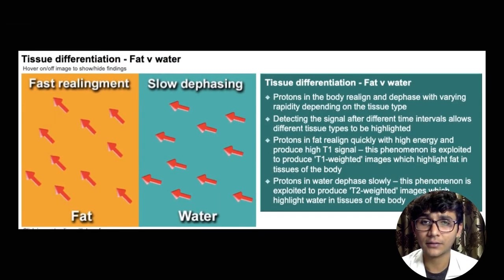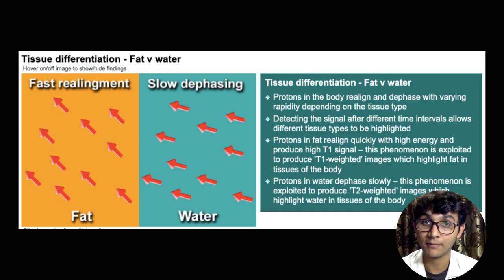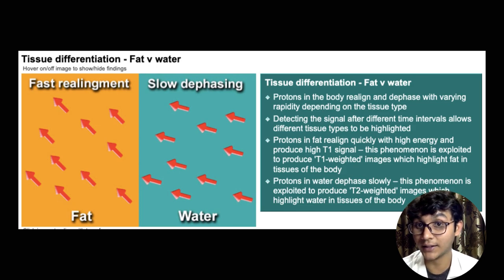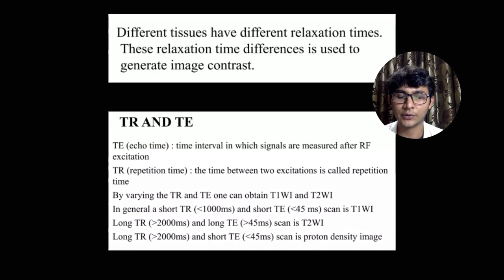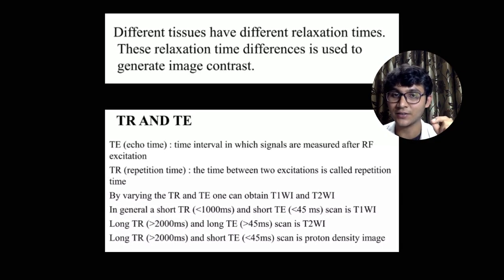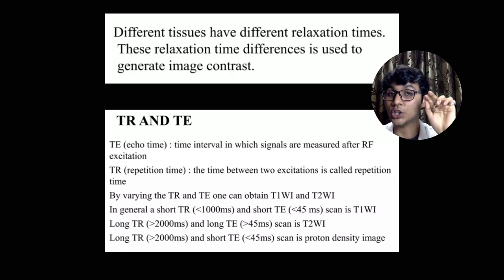Different tissues realign their protons at different speeds after the radio frequency impulse. Fat is known to reposition its protons the fastest, so on T1 weighted images you see higher appreciation of fat. On T2 images you see higher appreciation of fat and water, because water realigns itself a little more slowly than fat. To understand this, you need two concepts: TE, or echo time — the interval in which signals are measured after RF excitation — and TR, or repetition time, the time between two RF excitations.